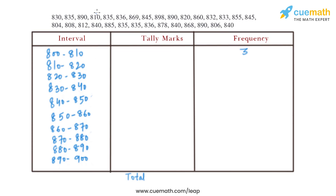Between 810 and 820, we consider 810 in this interval. There are two values total. Between 820 and 830, there is only one value: 820, so the frequency is 1.